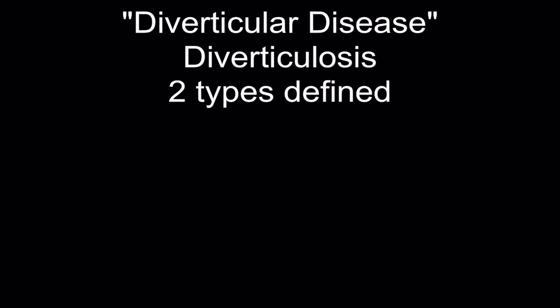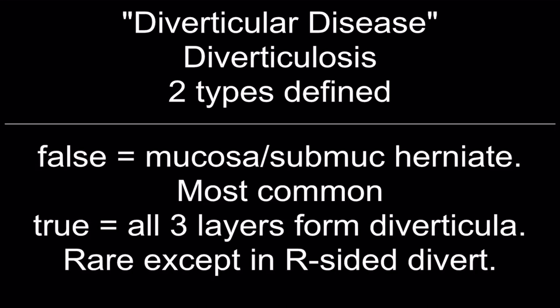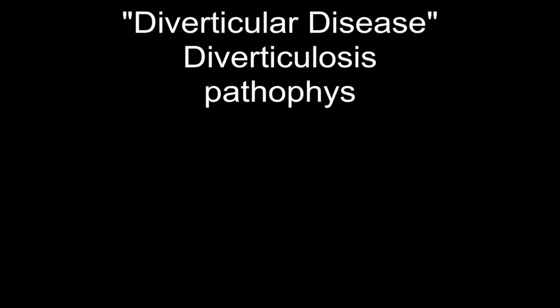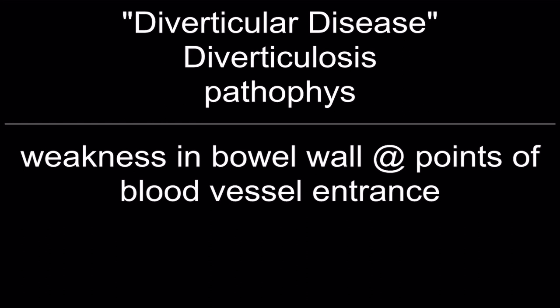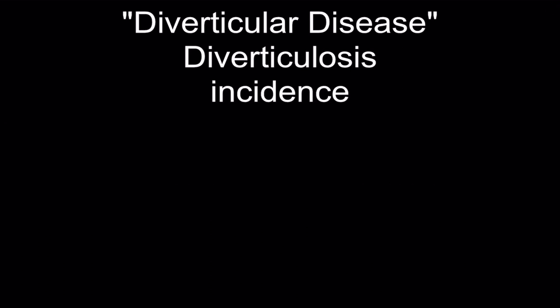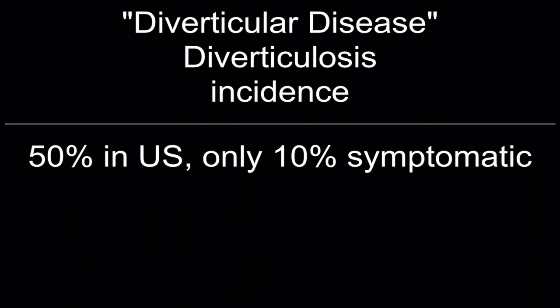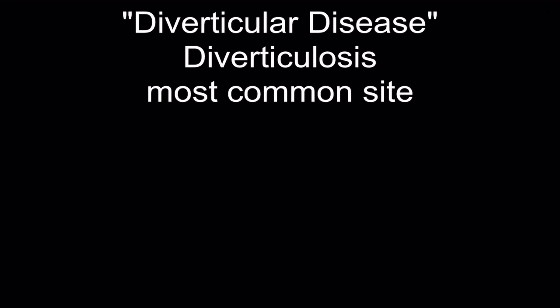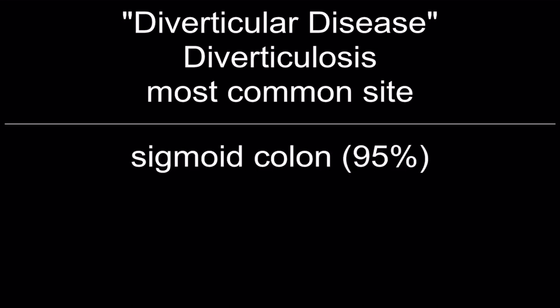Diverticulosis — two types: false diverticula (mucosa and submucosa herniate — most common) and true diverticulum (all three layers — rare except in right-sided diverticulitis). Pathophysiology: weakness in the bowel wall at points of blood vessel entrance. Incidence: 50% in the US, only 10% are symptomatic. Most common site: sigmoid colon, about 95% of the time.